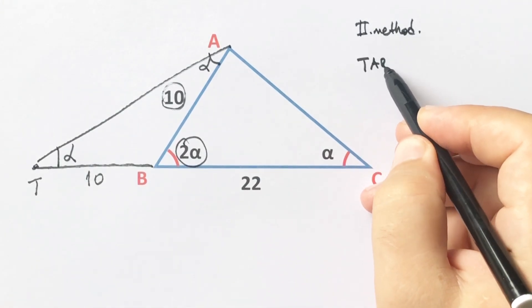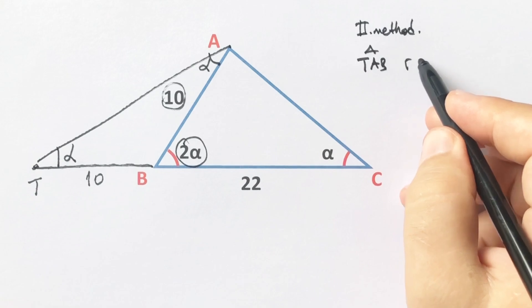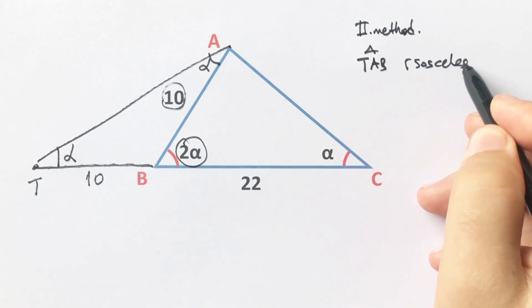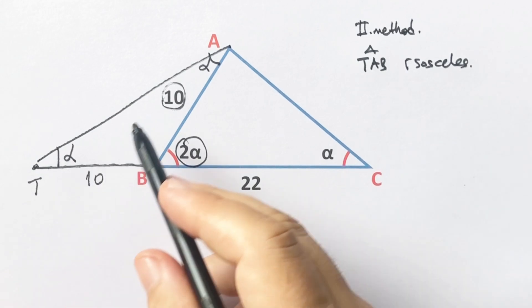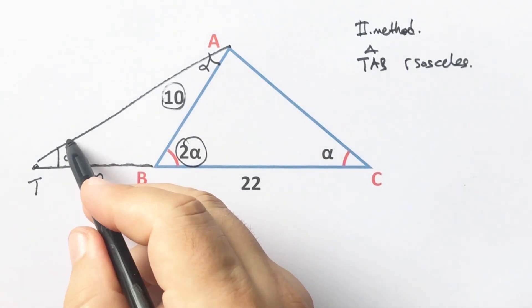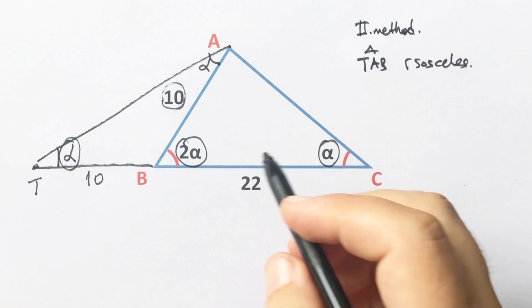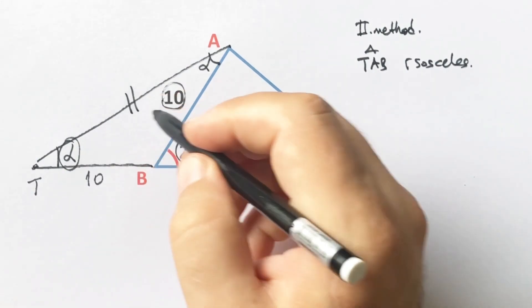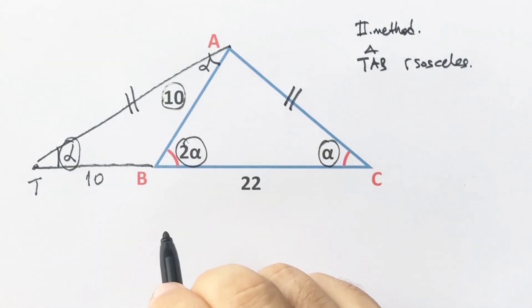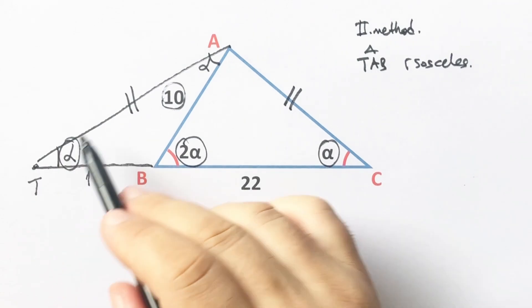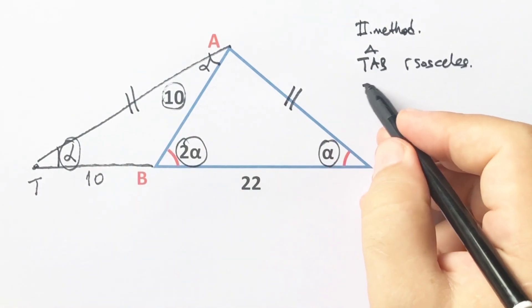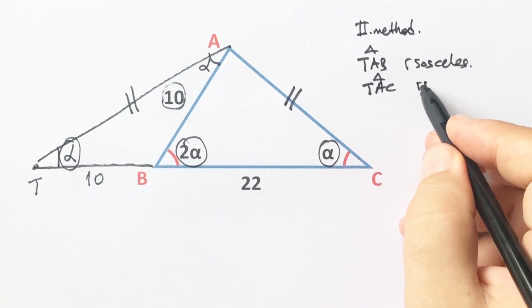So TAB triangle is an isosceles triangle. And then if you focus on the biggest triangle, these are same angles. That means these two sides must be equal. So TAC triangle is also an isosceles triangle.